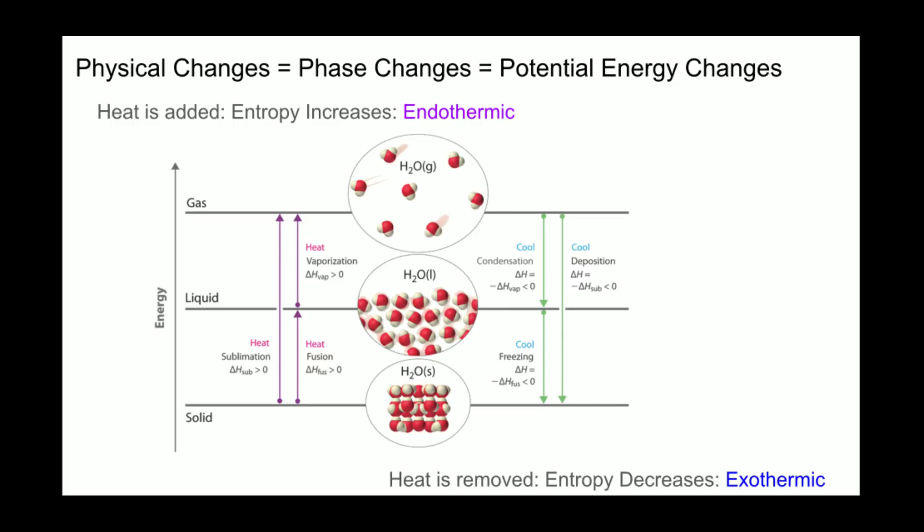You must add heat energy to cause something to sublime. So this is endothermic. So fusion, vaporization, and sublimation are endothermic phase changes. While condensation, freezing, and deposition are exothermic.